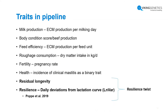This has left us with the following traits in the pipeline. In ADAM the maximum number of traits is six, and we are already beyond that, so we might have to reduce the number. We plan to include milk production as energy-corrected milk, body condition score, and beef production. Body condition score is important for resilience, and beef covers the beef part of the application. We also want to look at feed efficiency and roughage consumption, fertility and health — where we aim to include clinical mastitis as a binary trait — and then the resilience twist with residual longevity and LN-VAR from the Poppe study.